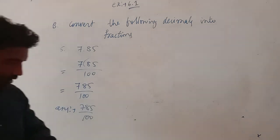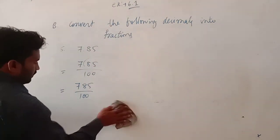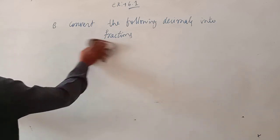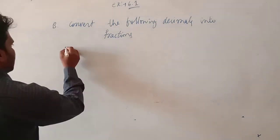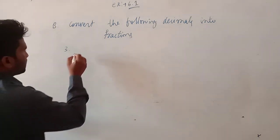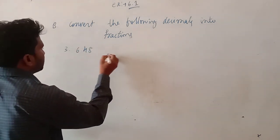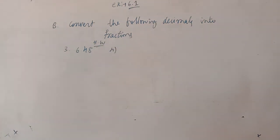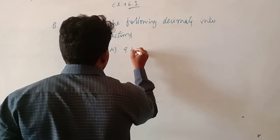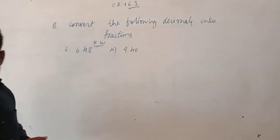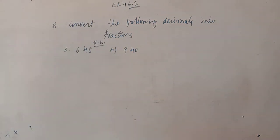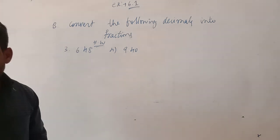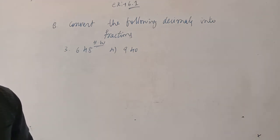So in the two parts — the third one and fourth one — third one is 6.48 and fourth one is 9.4. Those are for homework. Remaining parts C, D, and E for the next class. Thank you.